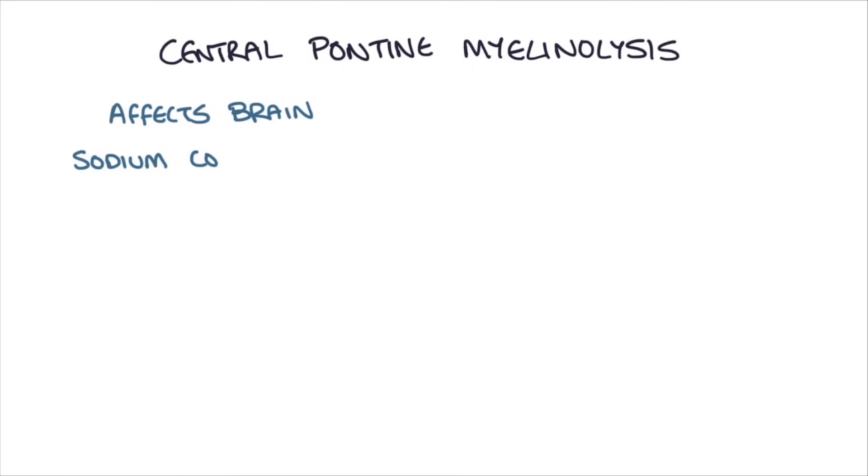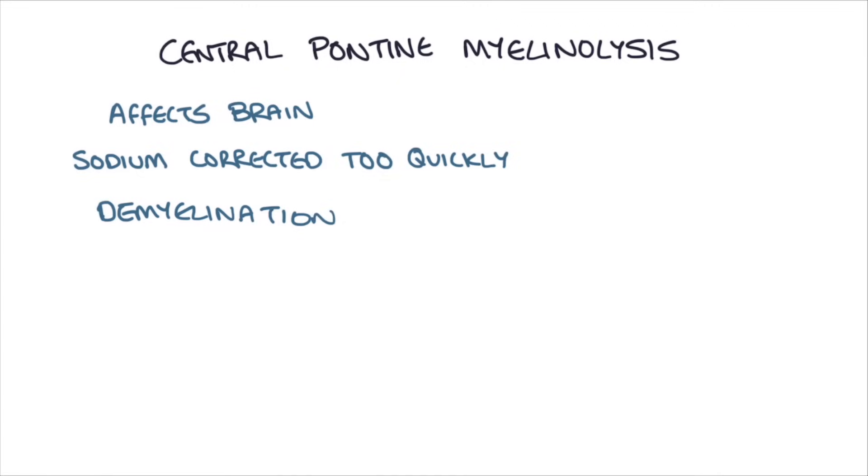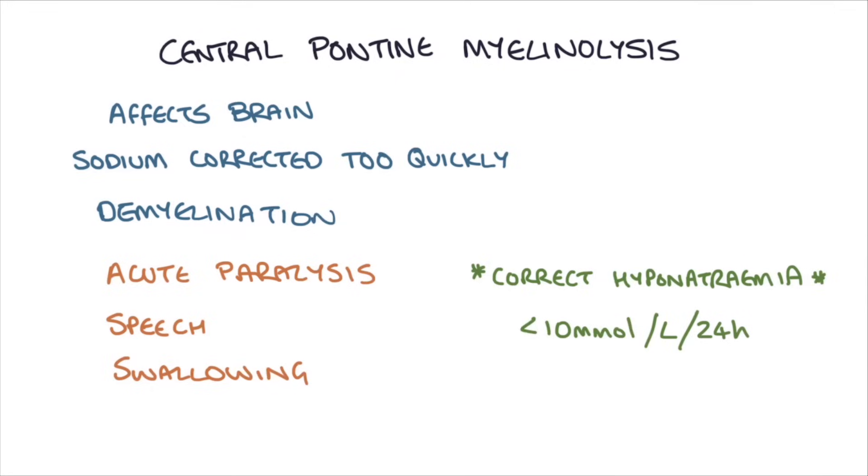The final thing is just to mention a condition called central pontine myelinolysis. This is a disorder that affects the brain when sodium is corrected too quickly. What happens is the myelin sheath of the nerve cells in the brain becomes damaged by the quick change in sodium. The osmotic balance in that myelin sheath becomes disrupted, and it causes demyelination of the nerve cells. This can lead to all kinds of problems such as acute paralysis or problems with speech or swallowing. To prevent this, we only try and correct the hyponatremia at a rate of less than 10 millimoles per liter over 24 hours. If it exceeds this, you need to be very careful because you could be causing central pontine myelinolysis.